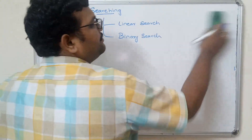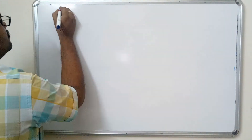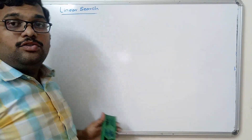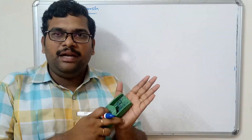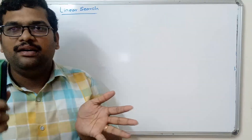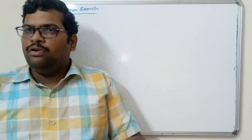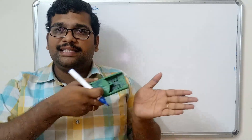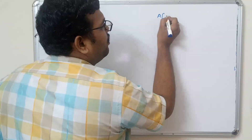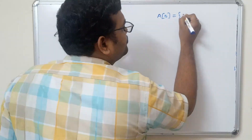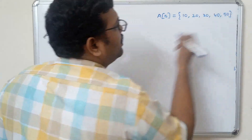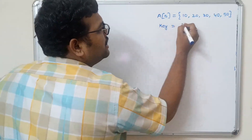Let us start with the linear search. In linear search we have to consider a key element and we keep on searching each and every element until we find the key. There is no special logic here — we compare the key element with each and every element in the array. For example, let us take an array of five elements: 10, 20, 30, 40, 50, and the search key element is 30.